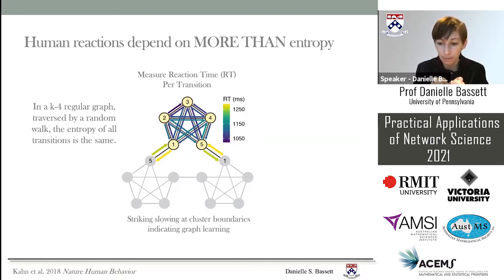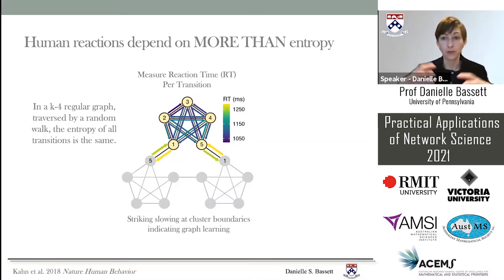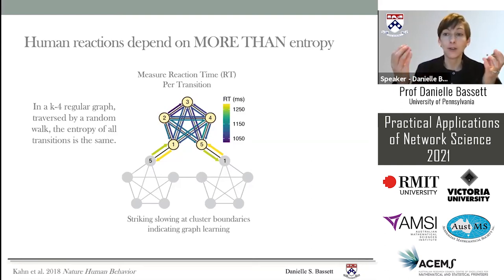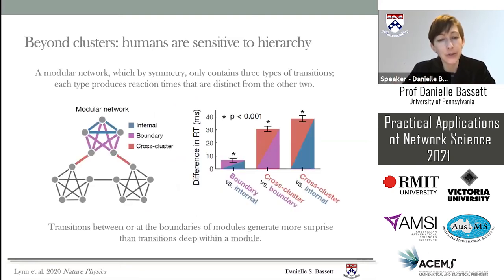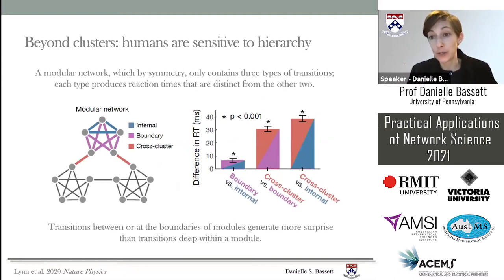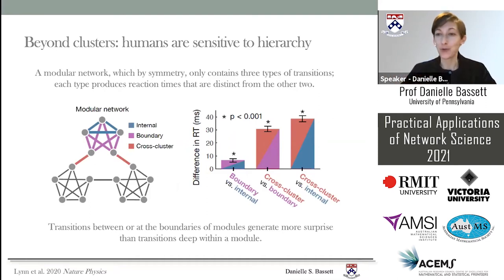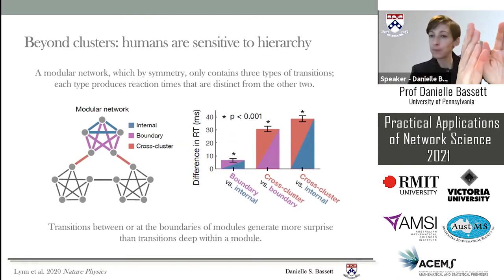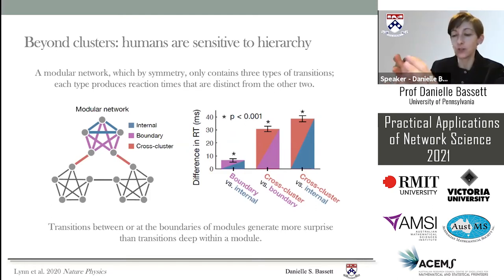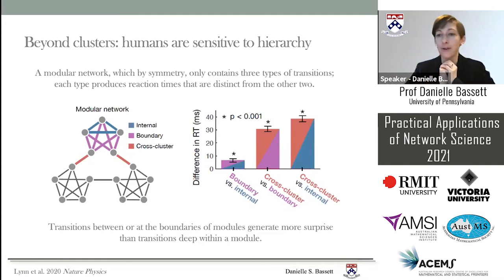Humans respond quickly inside a module and very slowly between modules. That is unexpected — it means people are not focusing on local information alone; they're somehow appreciating the mesoscale architecture, the global organization of their environment, and that global organization is altering their responses. We dug further and asked whether humans are simply doing category learning — maybe they take five elements and assume it's a category. If that were the case, there would be no difference in reaction time inside a module.